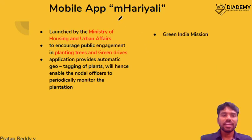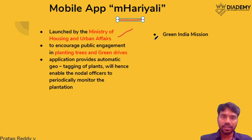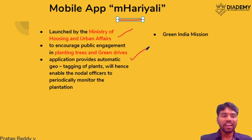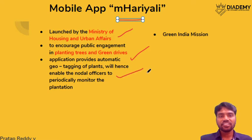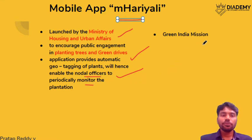The M-Hariyali mobile app — 'Hariyali' meaning greenery — is an initiative by the Housing and Urban Affairs Ministry. It engages common citizens in tree-planting drives. When you plant a new plant, the app automatically geotags it, and this information is shared with nodal agencies. This contributes to the Green India Mission and its objectives.